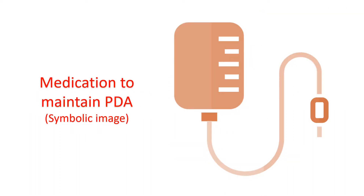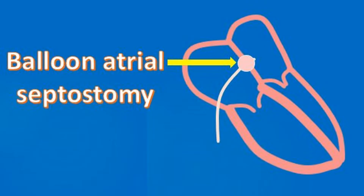Sometimes a baby may be born with a very small communication between the upper chambers. This defect will not provide sufficient mixing and the baby will be blue due to poor oxygen content of the blood. Emergency treatment is to prevent the normal closure of the ductus arteriosus after birth by giving medication, which has to be administered as a continuous drip. After this emergency treatment, the baby undergoes an emergency procedure known as balloon atrial septostomy.